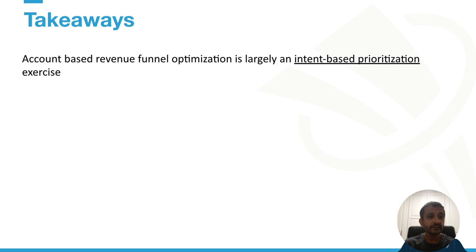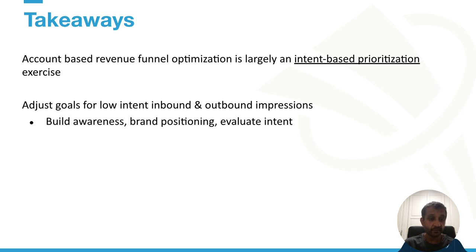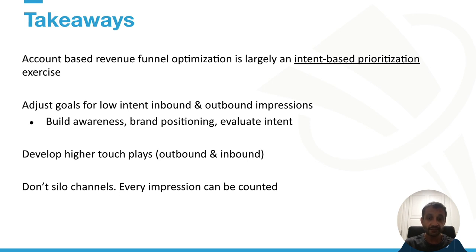Account-based revenue funnel optimization is largely an exercise in intent-based prioritization. You want to adjust your goals for low-intent accounts — for inbound and outbound impressions. If an account is not showing intent, you may not want to sell them right away. Instead, you may want to build brand awareness and positioning, and use it as a vehicle to evaluate intent through content. For this to work, you have to develop higher-touch plays — both outbound and inbound — to take advantage of that increased budget. But don't silo your channels. Recognize that outbound impressions, whether ads, your website, or outbound emails, are all impressions that can be counted towards the overall intent score.